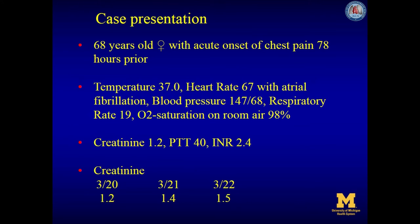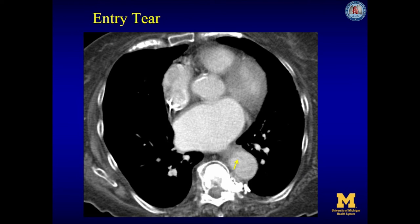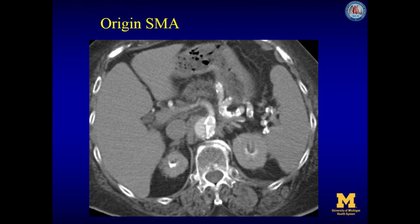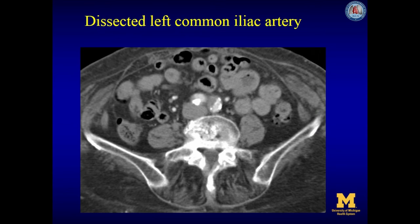She also had markedly diminished pulses in her legs and requires intervention for correction of the malperfusion. Initial CT imaging reveals part of an entry tear at the mid thoracic descending aorta, as shown by the yellow arrow. CT imaging demonstrates a collapsed true lumen with the superior mesenteric artery coming off the true lumen. CT imaging of the common iliac arteries shows a dissected left common iliac artery, while the right common iliac artery is not dissected.